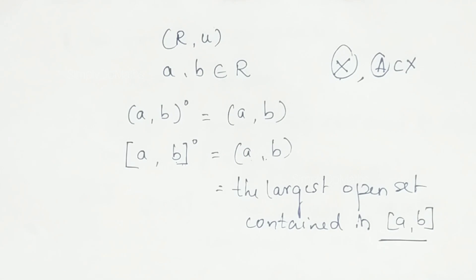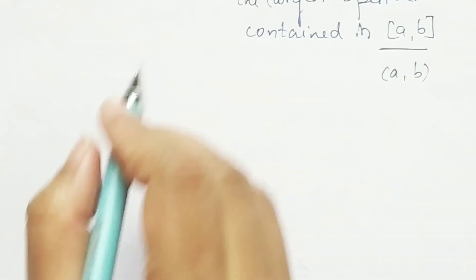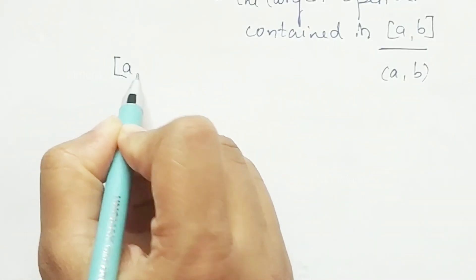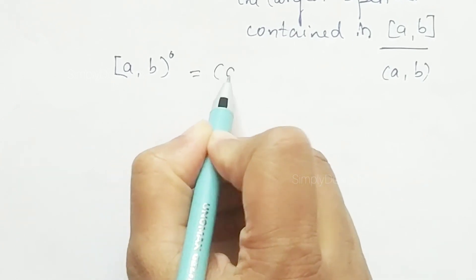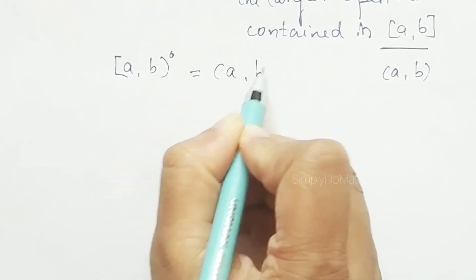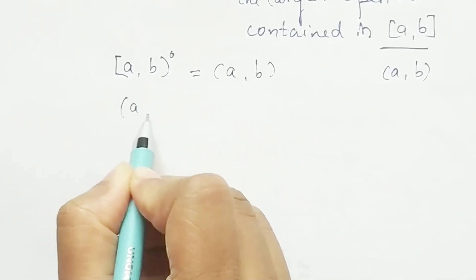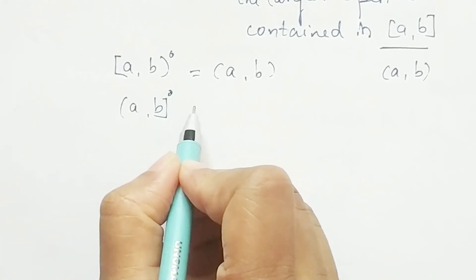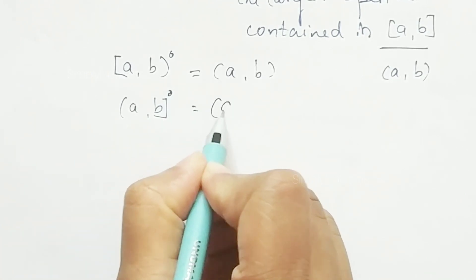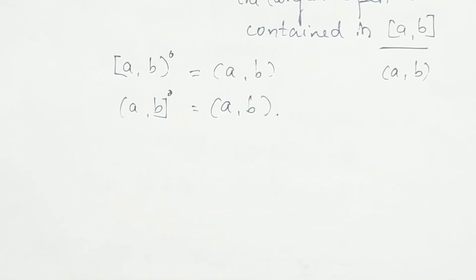This open interval (A, B) is the largest open set contained in the closed interval [A, B]. Similarly, the semi-closed interval [A, B) has interior equal to the open interval (A, B) itself.